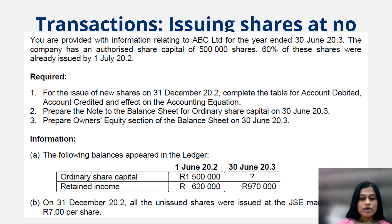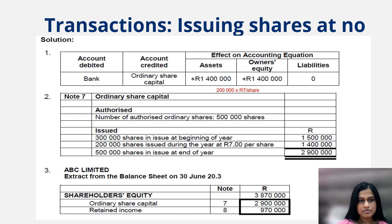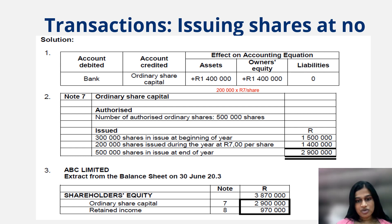We have additional information — balances that appeared in the ledger at the start of the year for ordinary share capital and retained income, and the retained income balance at the end of the year. On 31st December 2002, all the unissued shares were issued at the JSE market price of 7 rand per share. When you issue shares, you debit bank because you are receiving money, and you credit ordinary share capital. The amount is the number of shares issued multiplied by the issue price, giving a total of 1.4 million.